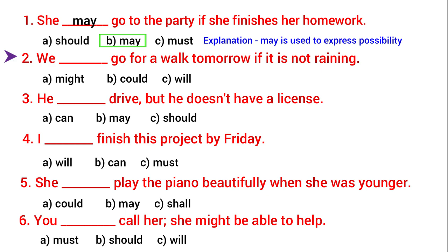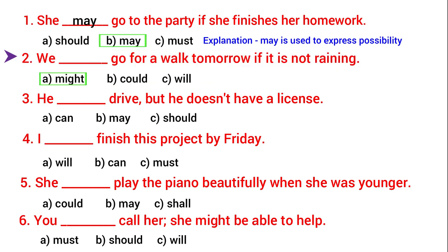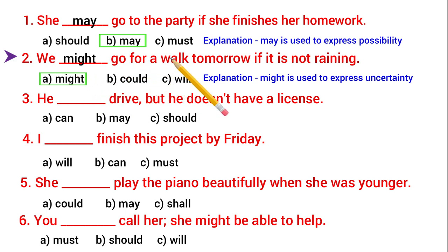Next: 'We blank go for a walk tomorrow if it is not raining.' Might, could, or will? In this sentence we will use 'might', because we use the modal verb 'might' to express uncertainty — means to express something which we are not sure about. So we might go for a walk tomorrow if it is not raining — not sure, right?